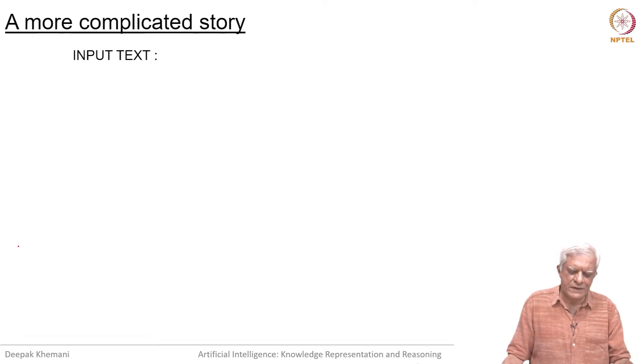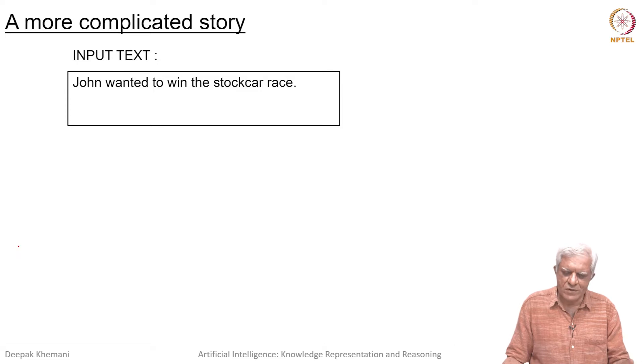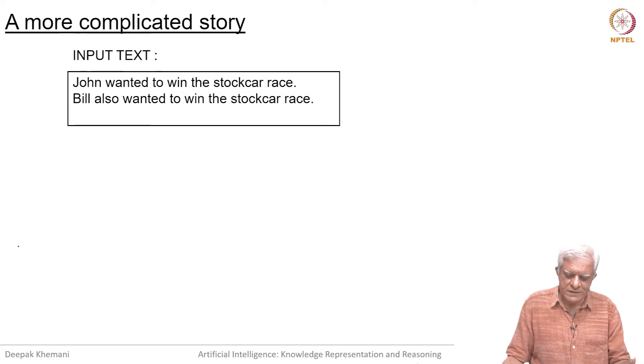This is a slightly more complicated story and this is the input text. It is not very long, but it is complicated. John wanted to win the stock car race.